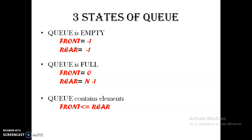Front and rear in a queue are similar to the top pointer in a stack. Front and rear are pointers pointing to the front end and rear end respectively. If front equals minus one and rear equals minus one, the queue is empty. Otherwise, if front equals zero, the queue starts from index zero.